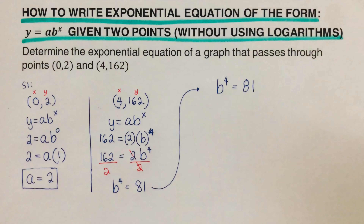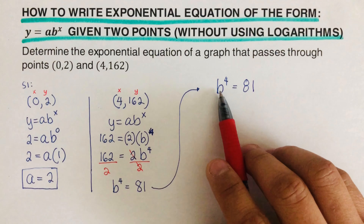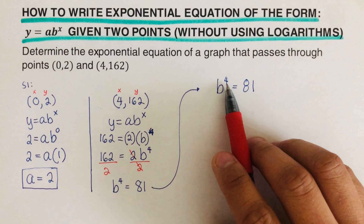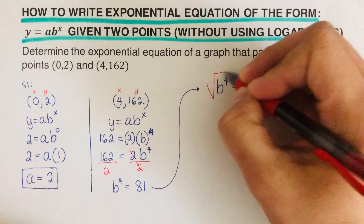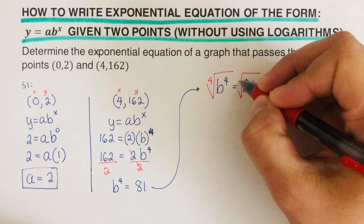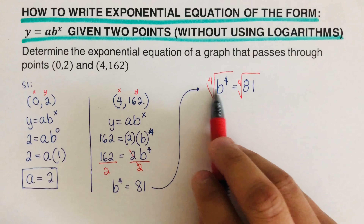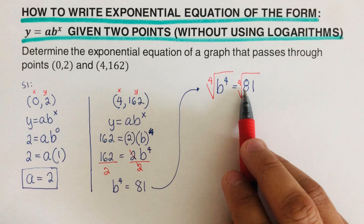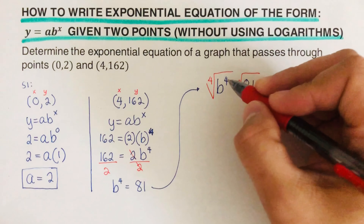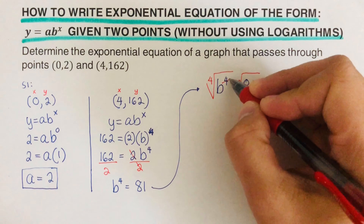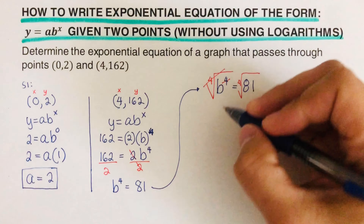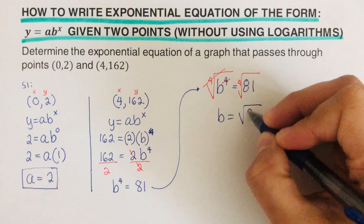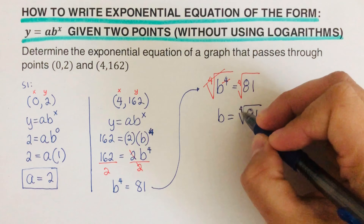We're not using logarithms, and the target for step two is to solve for b by itself. Since b is raised to the fourth power, we take the fourth root of both sides. The fourth root and the fourth power cancel out, leaving us with b equals the fourth root of 81.